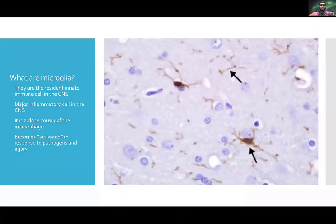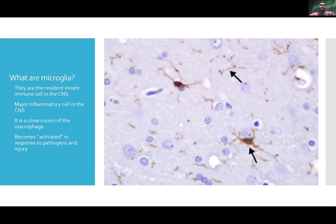So to answer the first question: what are microglia? They're the resident innate immune cell in the CNS. They're also the major inflammatory cell in the CNS, and a close cousin of the macrophage. Similar to astrocytes, they become activated in response to pathogens and injuries.